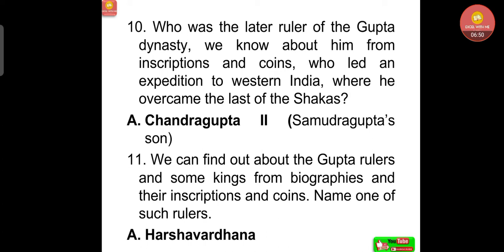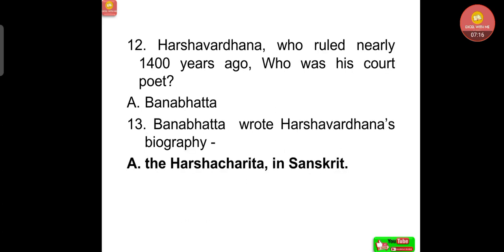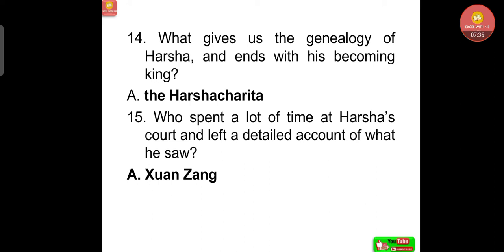Who was the later ruler of the Gupta dynasty known from inscriptions and coins, who led an expedition to western India and overcame the last of the Shakas? That was Chandragupta II, Samudragupta's son. About Harshavardhana, who ruled nearly 1400 years ago: his court poet was Banabhatta. Banabhatta wrote Harshavardhana's biography called the Harsha Charita, written in Sanskrit. The Harsha Charita gives us the genealogy of Harsha and ends with his becoming king.